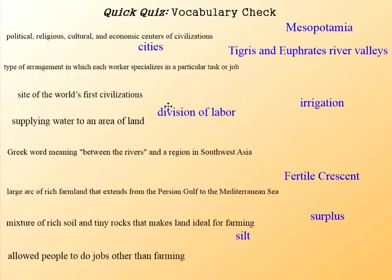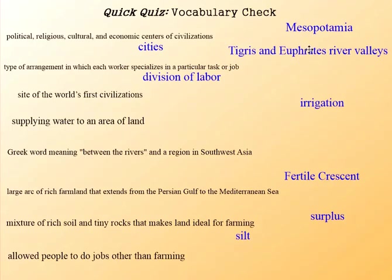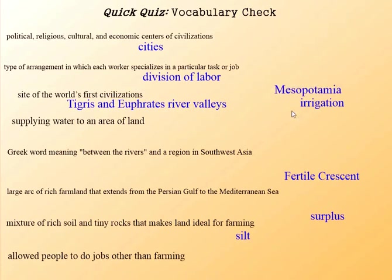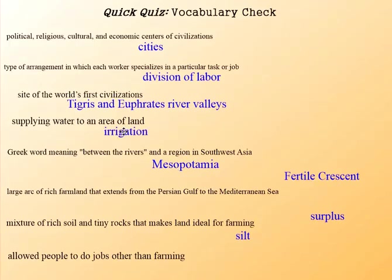A division of labor is a type of arrangement in which each worker specializes in a particular task or job — you divide the labor among people who can do the jobs better. The Tigris and Euphrates river valleys were the site of the world's first civilization. The term Mesopotamia comes from Greek and means between the rivers, a region in southwest Asia. Irrigation is the process of supplying water to an area of land. The large arc of rich farmland extending from the Persian Gulf to the Mediterranean Sea is the Fertile Crescent — arc is your key to crescent.